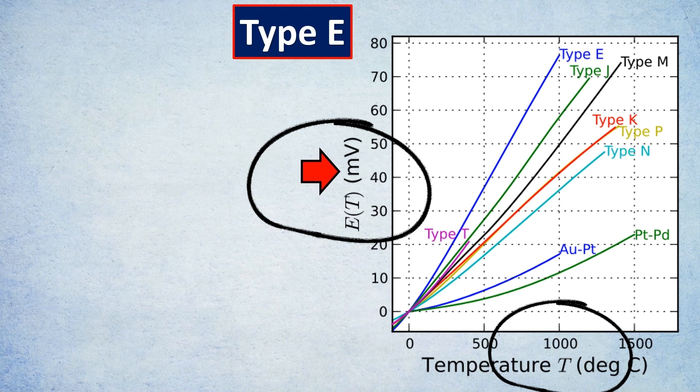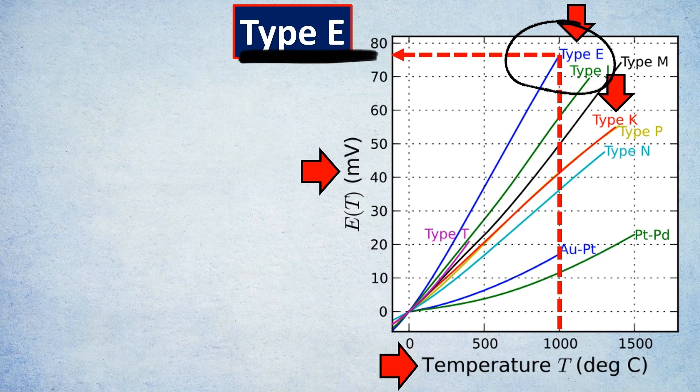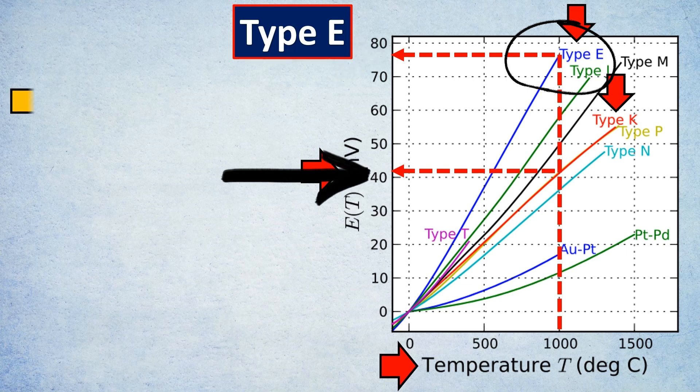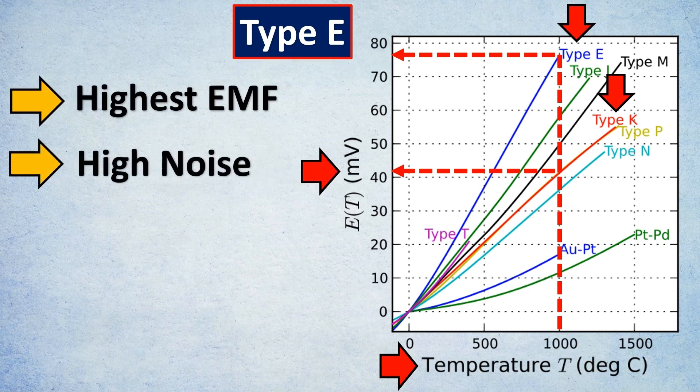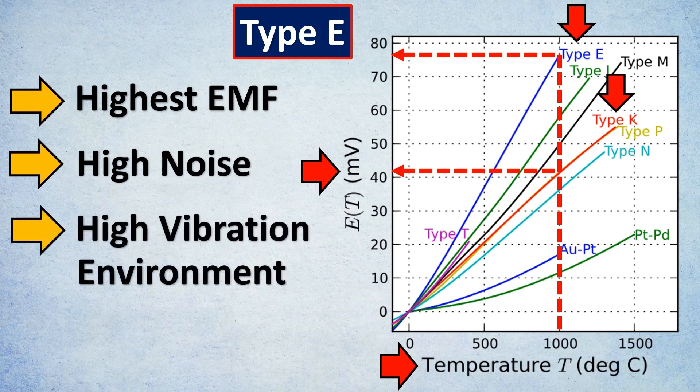Type E type thermocouple. Now if you see the EMF chart versus the temperature you would notice that for type E thermocouple the EMF generated is the highest, which is around 78 or 79 millivolt if you see. And for K type it is just 42. So in cases where you require the highest EMF that is usually in high noise requirements or where there is high vibration in the environment, E type is the most preferred type in those cases.